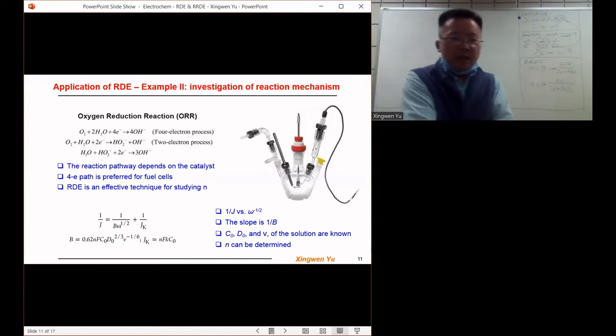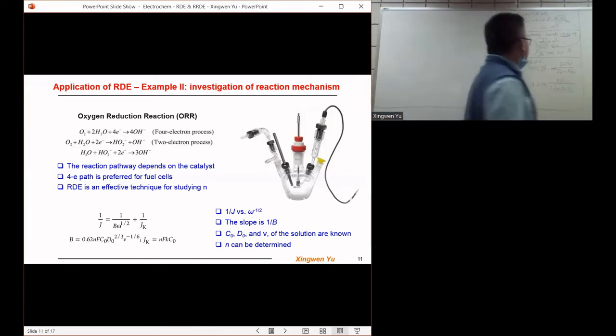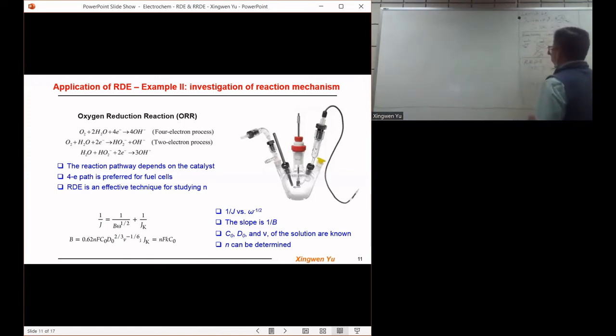We can use the KL equation to study the charge transfer number n in this case, to see if the electrons in the reaction follow the four electrons or the two electrons.